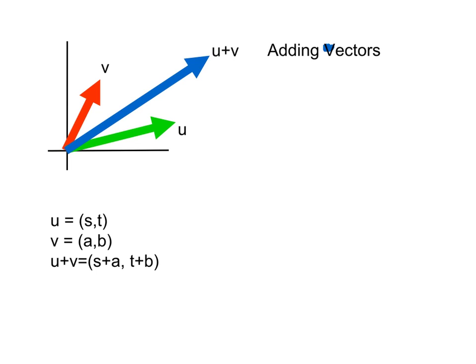So as a little bit of setup here, we have a vector u right here, a vector v in this direction, and then using the parallelogram method of addition, we would get that the sum is u plus v. Equivalently, down here, if we call the coordinates of u s and t...